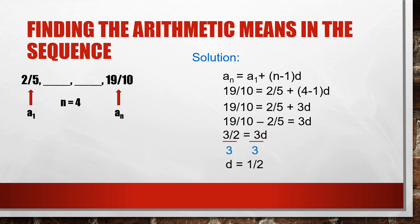Adding 1/2 to 2/5 gives 9/10, and adding 1/2 to 9/10 gives 7/5. Adding 7/5 to 1/2 gives 19/10. Thus, the 2 arithmetic means between 2/5 and 19/10 are 9/10 and 7/5.